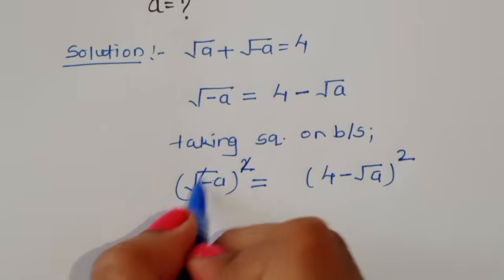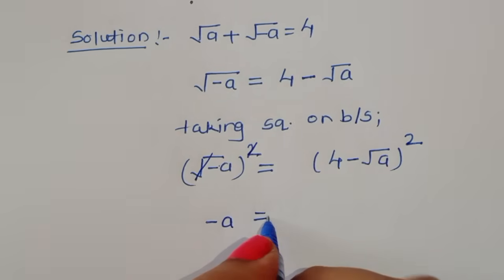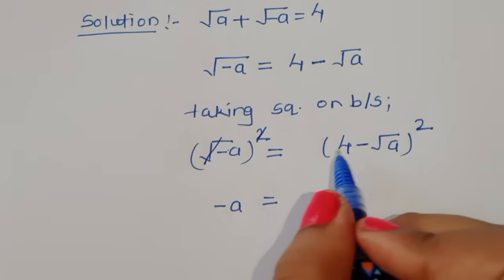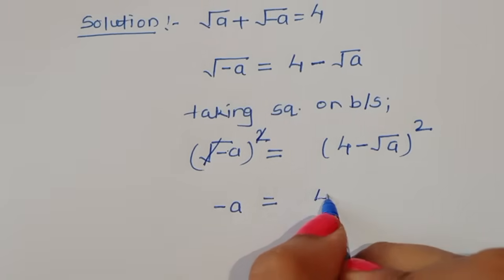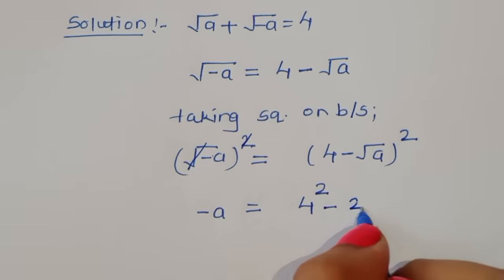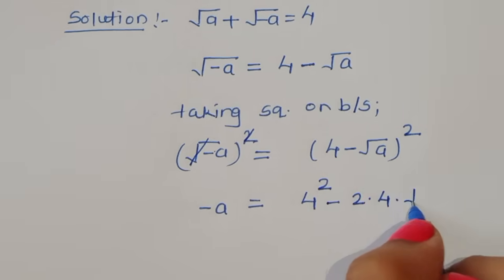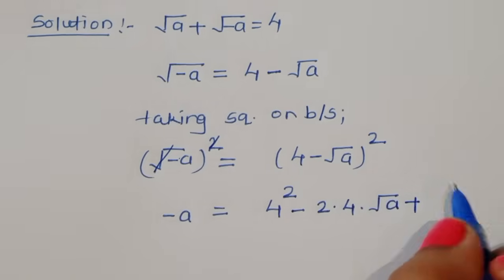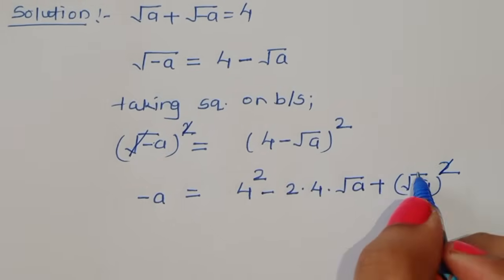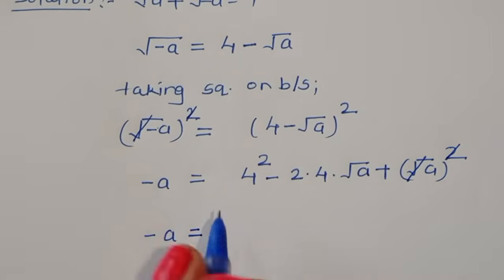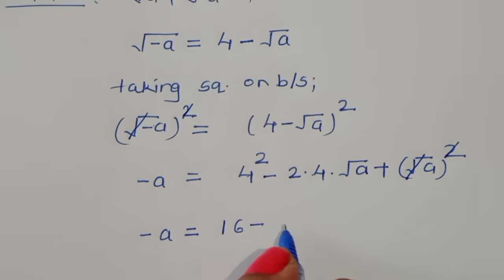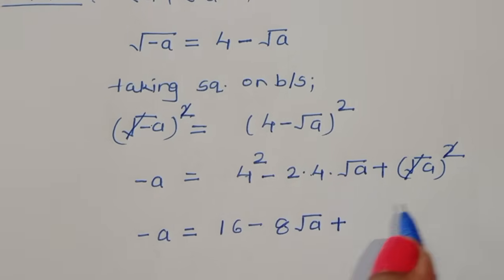The square cancels from the square root, so minus a is equal to the expansion of (4 minus √a)². Using the a minus b square formula — a² + b² minus 2ab — we get: 4 square is 16, minus 2 times 4 times √a, which is minus 8√a, plus square root of a whole square which gives plus a.